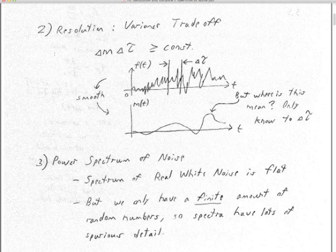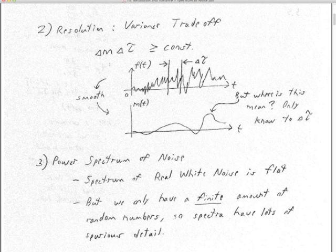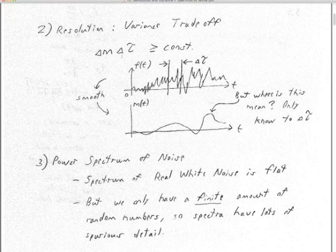The resolution versus variance trade-off is very similar. You've got some kind of complex and probably noisy seismogram. Delta M — your uncertainty in the value of the mean — times delta tau, your uncertainty in what time that value occurs at — that product also has to be greater than or equal to some non-zero constant. That's another uncertainty principle.